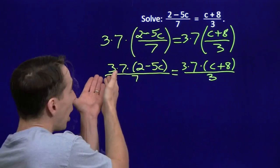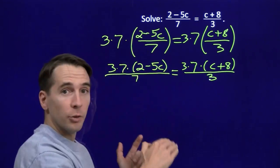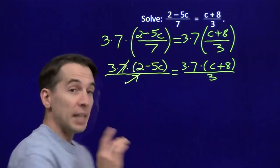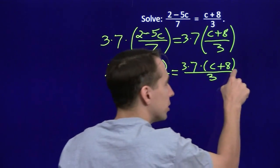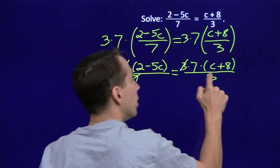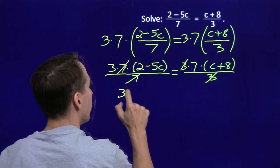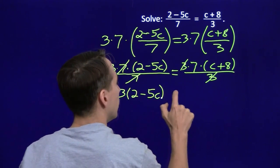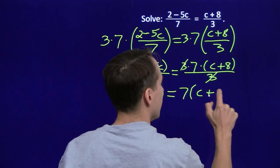Now over here on the left we have a product in the numerator, 3 times 7 times this whole quantity. This is a product of three terms. So I can cancel. I can cancel the 7s. And that was our plan all along, knock out the denominators. Over here I've got a product in the numerator. I've got a 3 in the numerator, 3 in the denominator. I can cancel there as well. And I'm left with 3 times 2 minus 5c. And over here the 3s are gone and I'm left with the 7 and the c plus 8.